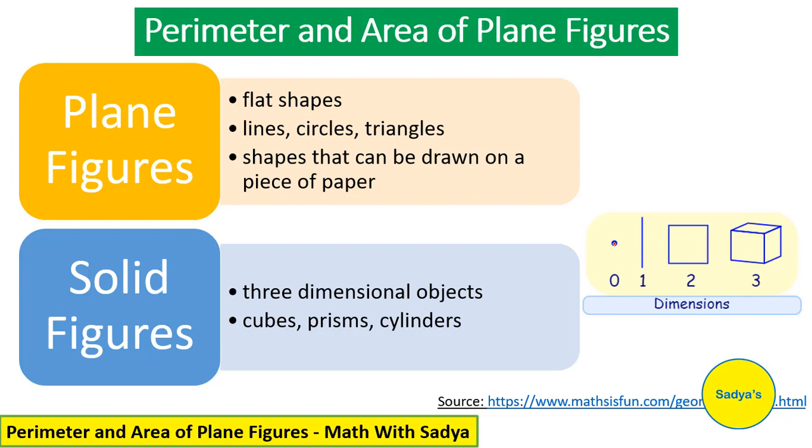If we have a point, it is 0 dimensional. If we have a line, so line is just length, it is 1 dimensional. If we have a square, it has 2 dimensions.